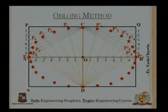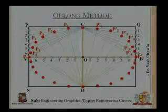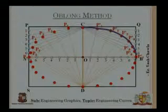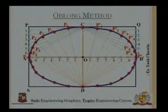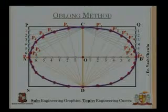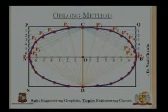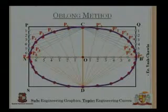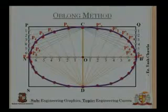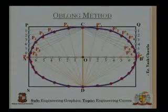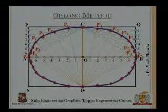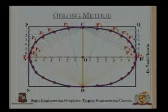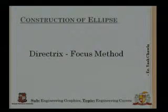Now I join all the points in a clockwise direction: C to P1 to P1' to P2', P3', and so on, finally returning to C. This gives us the required ellipse by the oblong method. These methods are very simple — you just plot the points on the ellipse and join them. The final method we are going to discuss is the directrix focus method.